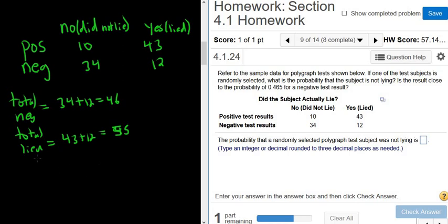Okay, in this question we want the probability that the subject was not lying. So not lie. Did not lie. So the probability that the subject did not lie is the number of ways to pick someone who did not lie divided by the total number of ways to pick a result.